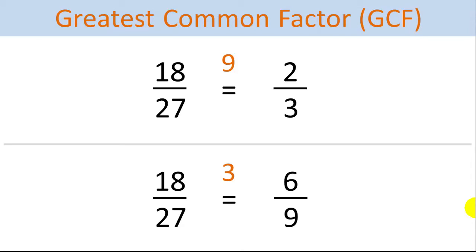Alternatively, we could reduce the fraction in smaller steps. We see that 18 and 27 are both divisible by 3, so we divide the numerator by 3 and get 6, and the denominator by 3 and get 9. Except that 6 ninths is still not in the smallest reduced form.